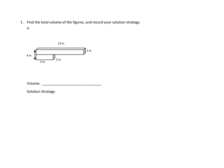Problem number one asks us to find the total volume of the figures and record your solution strategy. And then we've got our figure right here. So it looks like it's made up of two rectangular prisms — there's this long one right here, and then this short one right here.